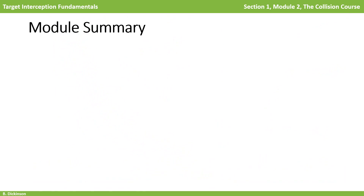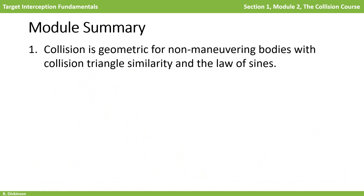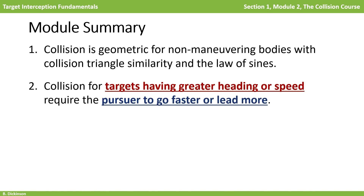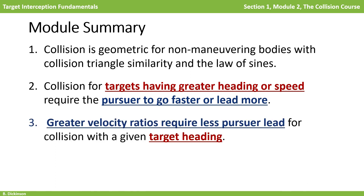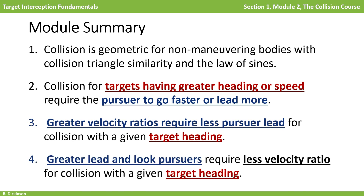Here are the principles to take away from this module. First, for non-maneuvering bodies, collision is described with geometry — we used trigonometry to explore the collision triangle. We found that to collide with targets having greater speed or greater heading, the pursuer had two options: increase its speed or increase its lead angle. The faster the pursuer relative to the target, the less lead needed to collide. The greater the lead the pursuer can implement, the greater the set of target headings it could collide with, and this is increasingly so as the speed of the pursuer increases relative to the target.